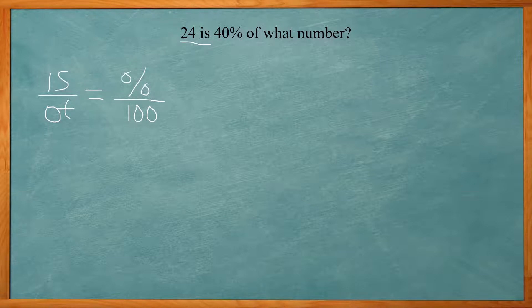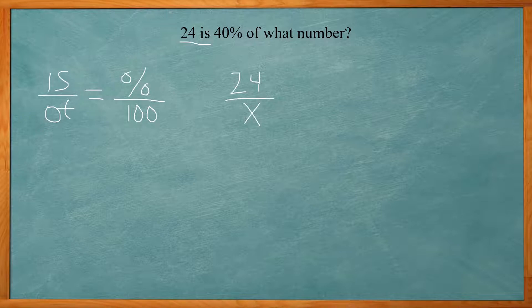Of what number. So that's an unknown value. So it's going to be replaced with a variable X. We have 40%. So it's going to be 40 on top here and then 100 on bottom.